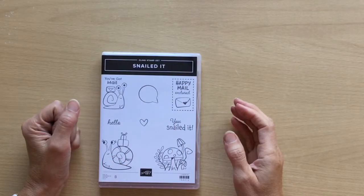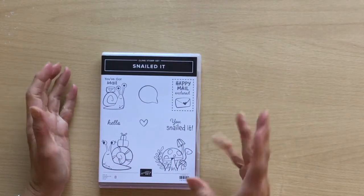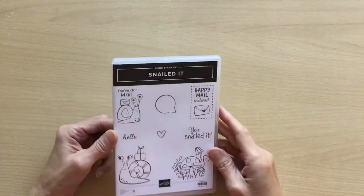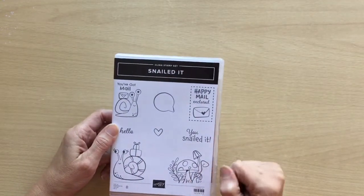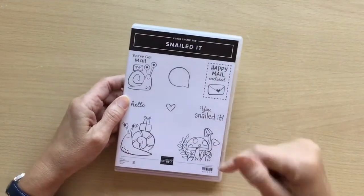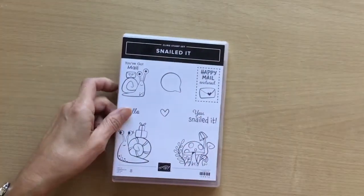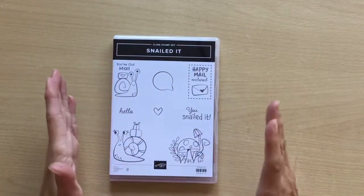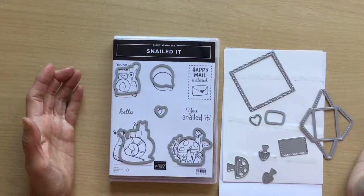Hello, my name is Linda. I'm a UK independent Stampin' Up demonstrator and today I'm making two four by four cards using the new stamp set Snailed It. This will be available in January 2021 and this is just a sneak preview.